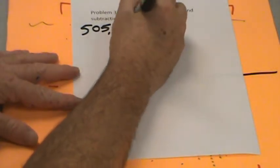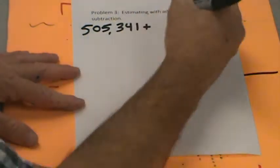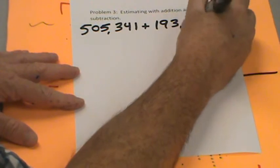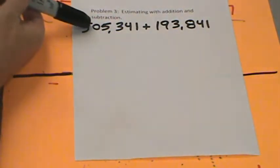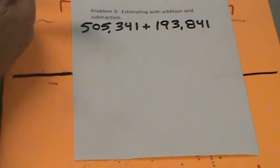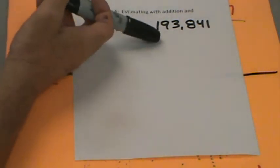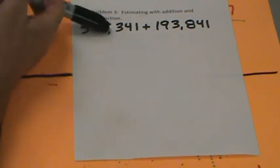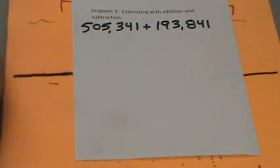Let's do a math sentence. Write this down: 505,341 plus 193,841. Let's say this is the population of Fresno, California, and this is the population of Bakersfield, California. Someone asks about how many people live in Fresno and Bakersfield combined, and you would say, 'I can round that and let you know.' We're going to round to the nearest hundred thousand.